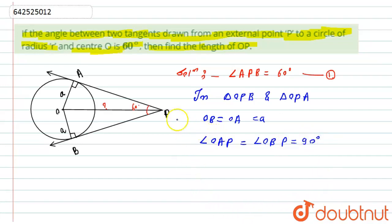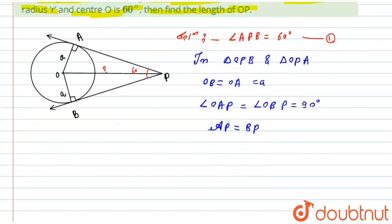Also, tangents drawn from an external point onto a circle are equal in length. Therefore, AP = BP — the two tangent lengths from point P are equal.